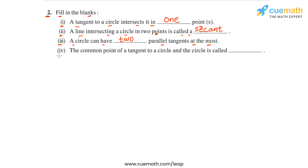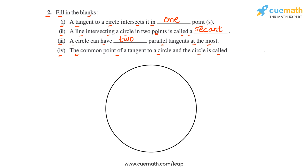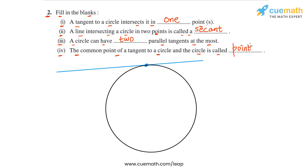Statement four says the common point of a tangent to a circle and the circle is called blank. A tangent intersects or touches the circle at exactly one point — that point is called the point of contact. The point at which the tangent touches the circle is the point of contact, which is the answer for statement four.